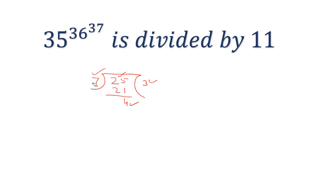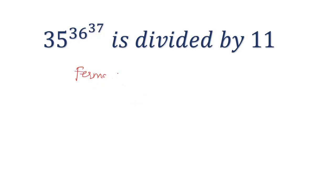First, let us know the property — Fermat's Little Theorem. The theorem says that when you divide any number a to the power p by a prime number p, the remainder will be a.